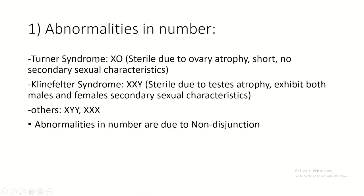I also have trisomy 18, 13, and 8. Another example of abnormalities in number is Turner syndrome, where the female has only one X instead of XX. The female is sterile, has ovary atrophy, is short, and does not express secondary sexual characteristics. Males can suffer from Klinefelter syndrome with genotype XXY - they are also sterile, have testis atrophy, and exhibit both male and female secondary sexual characteristics. Other examples include XYY and XXX.